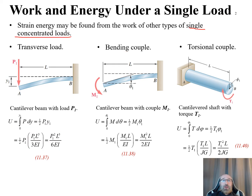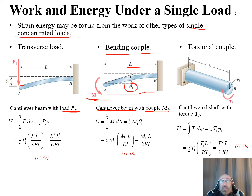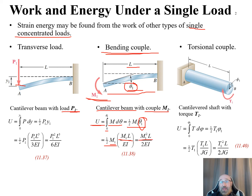For a bending couple M₁ on the same cantilever beam, with deflection angle θ₁, the strain energy U equals the integral from 0 to θ₁ of M dθ, giving one-half·M₁·θ₁. Substituting θ₁ equals M₁·L/(EI) and simplifying, the strain energy for a bending couple on a cantilever beam equals M₁²·L/(2EI), which is equation 11.38.